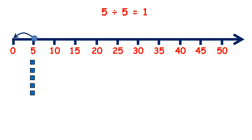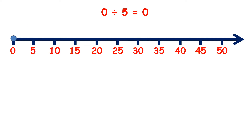5 divided by 5 is 1, and 0 divided by 5 is 0.